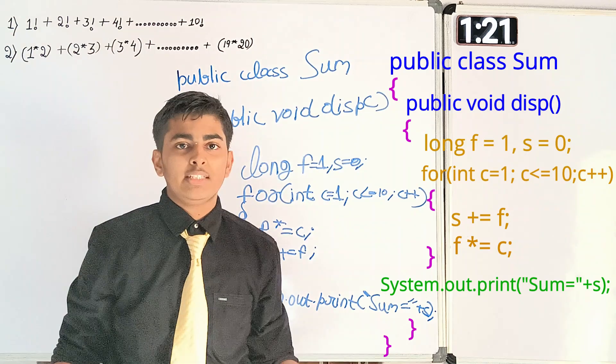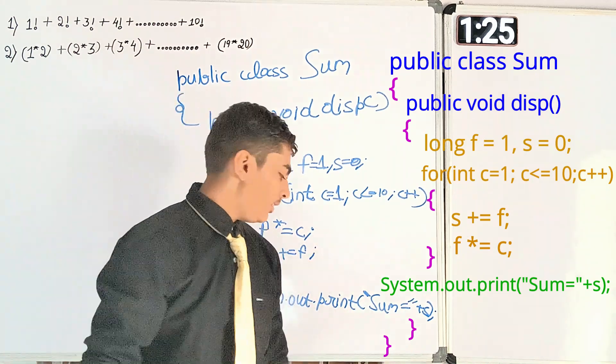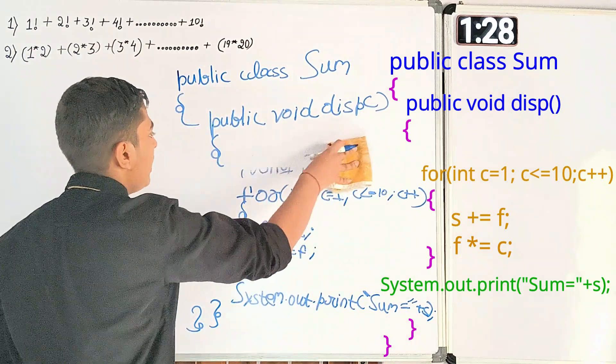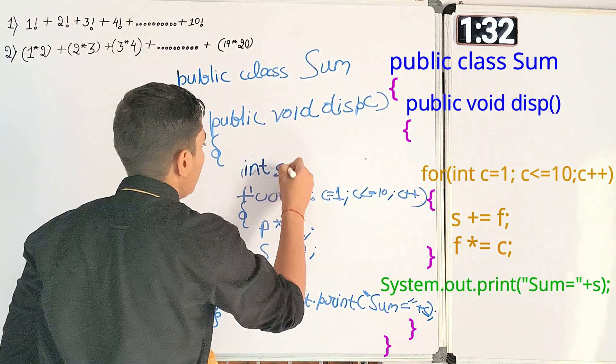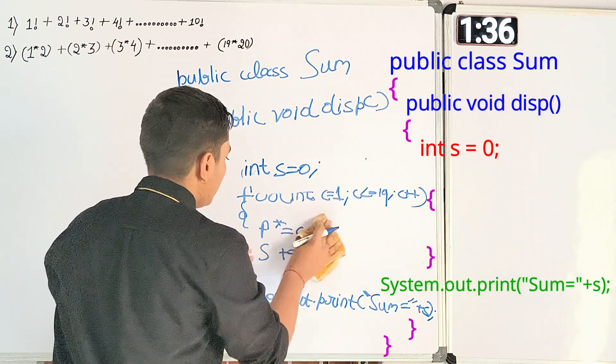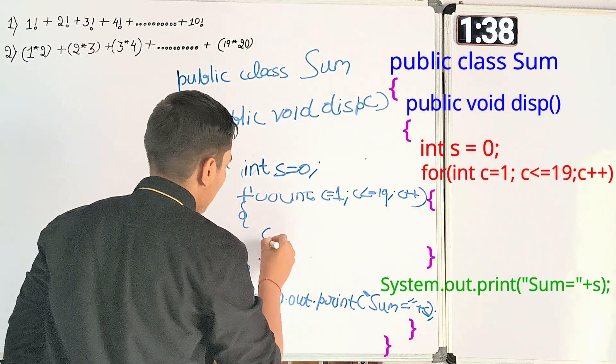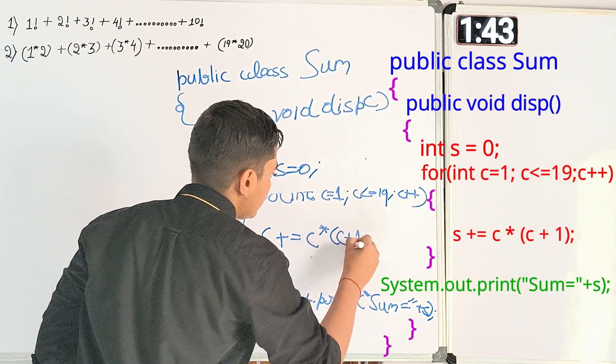With the minimum changes in this respective code only I will do the second one. Instead of long data type I will take the help of the int data type initially having 0 goes till 19 with doing the operation of s plus is equal to c into c plus 1 to find the sum.